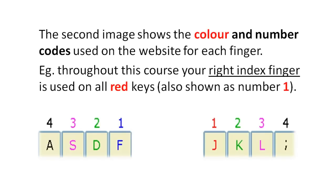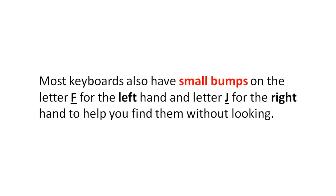The second image shows the colour and numbering codes used on the website for each finger. For example, throughout this course your right index finger is used on all red keys, also shown as number 1. Most keyboards also have small bumps on the letter F for the left hand and the letter J for the right hand to help you find them without looking.